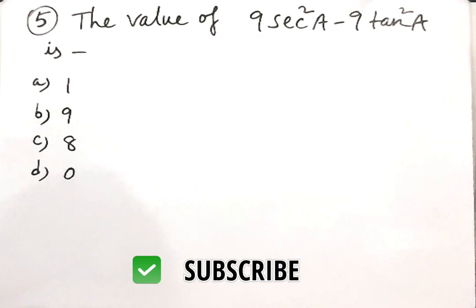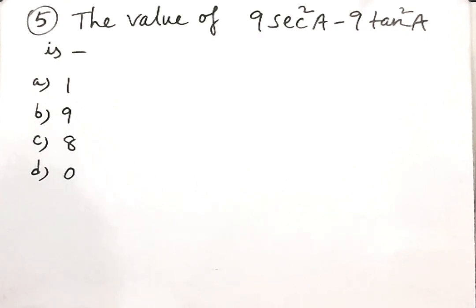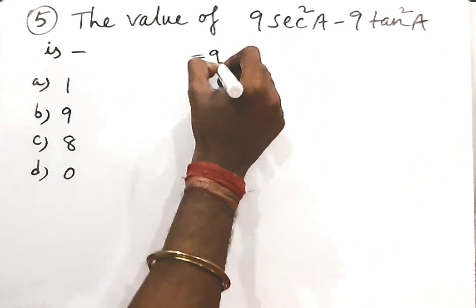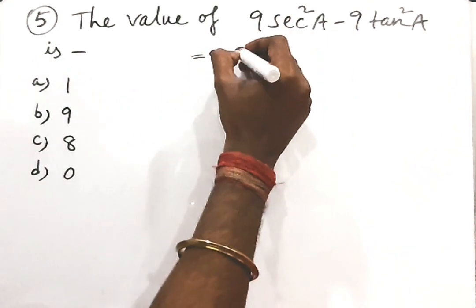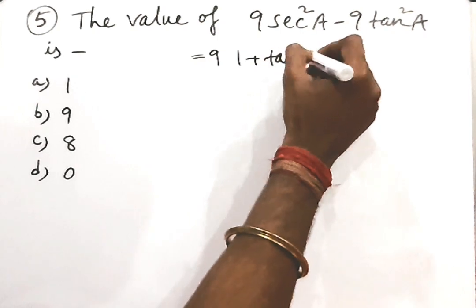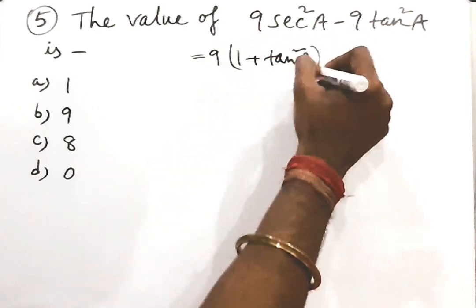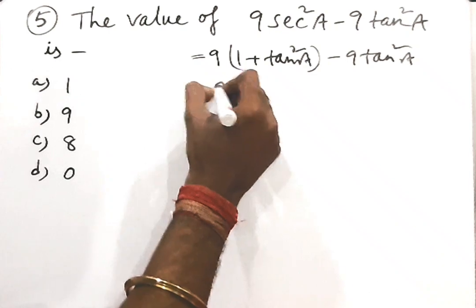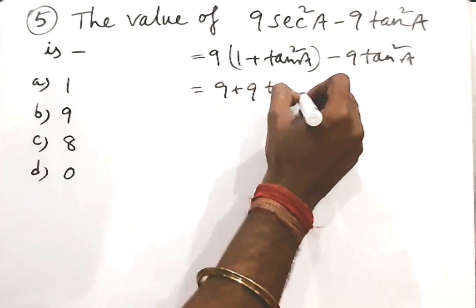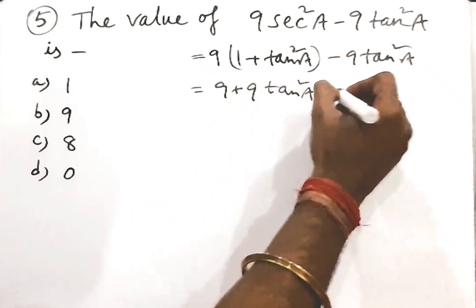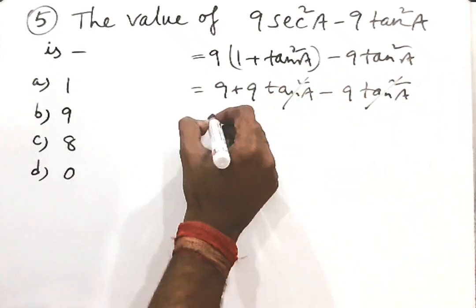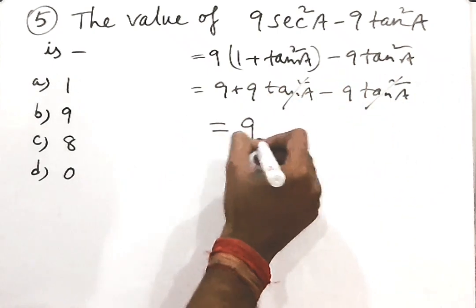Next question: the value of 9sec²θ minus 9tan²θ. We write 9 times (1 plus tan²θ) minus 9tan²θ, which simplifies to 9 plus 9tan²θ minus 9tan²θ. The tan²θ terms cancel, leaving 9 as the answer.